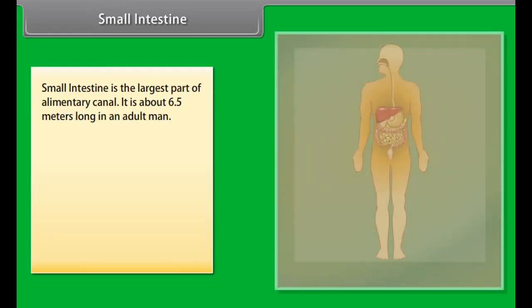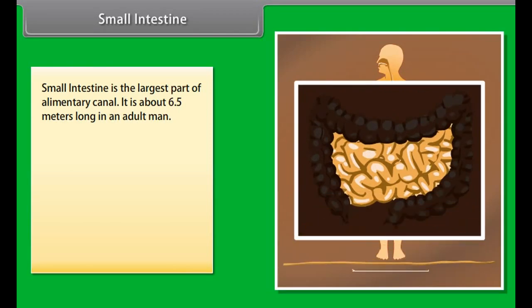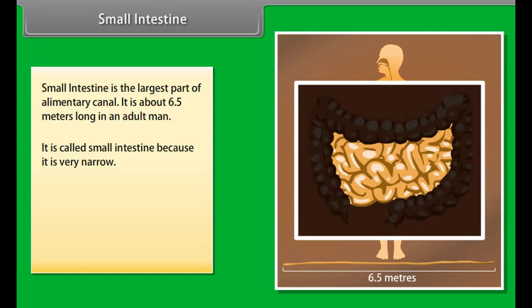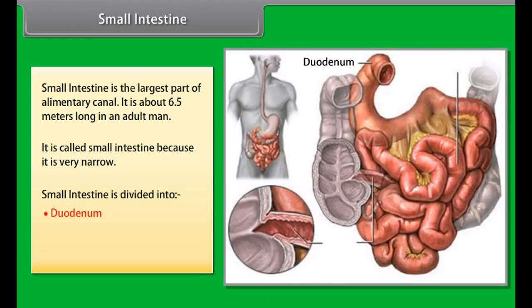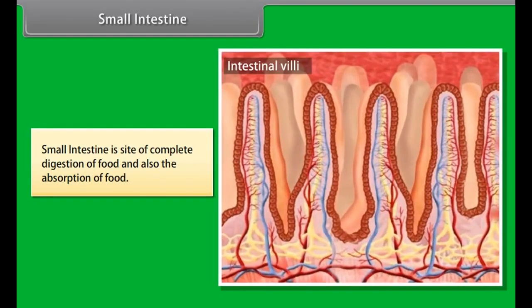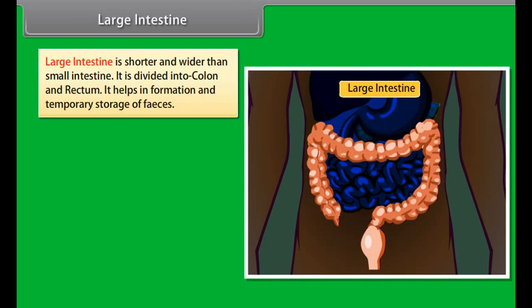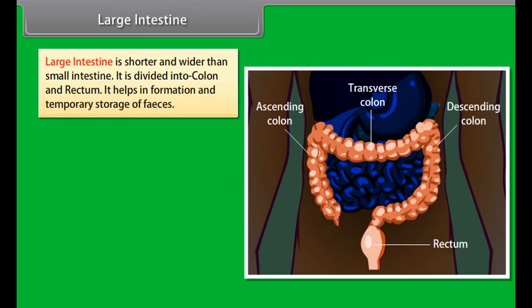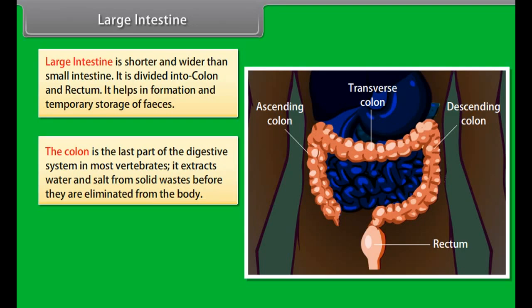The stomach is a thick, muscular, J-shaped sac present on the left side of the upper abdomen. It helps in mechanical churning and chemical digestion of food. Food is churned in the stomach for about three hours, breaking down into smaller pieces to form a semi-solid paste. The stomach wall contains tubular glands that secrete gastric juices containing HCl, enzyme pepsin, and mucus. Pepsin, activated by HCl, starts digestion of proteins, while mucus protects the stomach wall from HCl. The muscular wall mixes food and gastric juices.